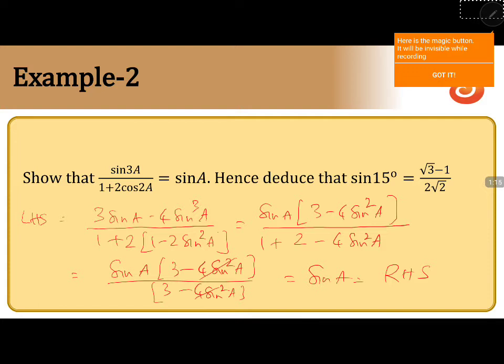Now let us prove the second part. Put A equals 15 degrees in the formula sin A equals sin 3A divided by (1 plus 2 cos 2A).